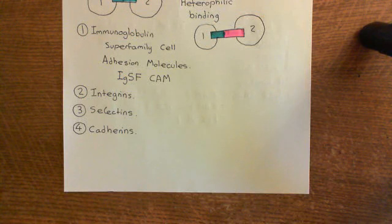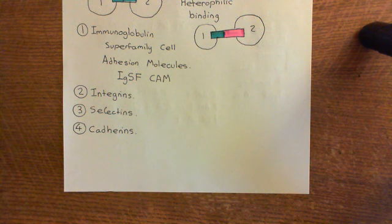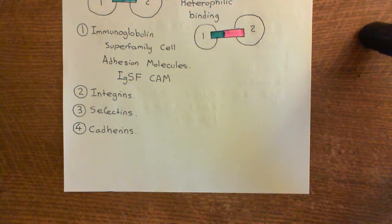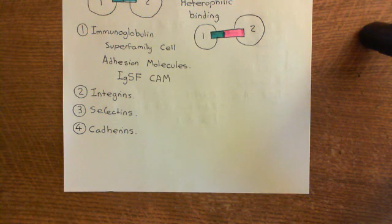Welcome to this next video in which we are discussing the integrins. We've discussed that integrins is one family of cell adhesion molecules — one of the four main families. Let's now discuss the structure of an integrin cell adhesion molecule.